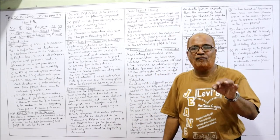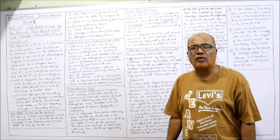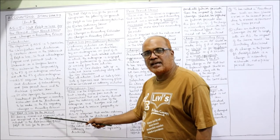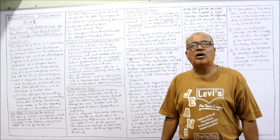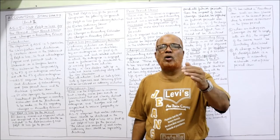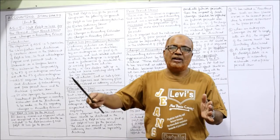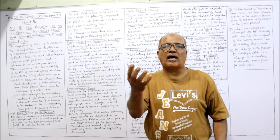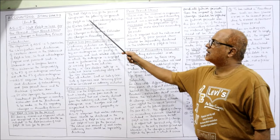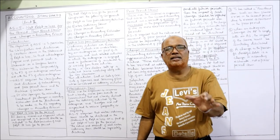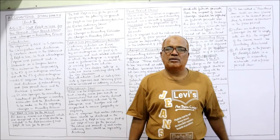Net profit or loss for the period means the current financial year. During the current accounting period, all items of income and expenses recognized in the period should be included in the determination of profit or loss. The accrual system is followed — all income and expenses are recognized for the period to calculate net profit or net loss. The net profit or loss for the period comprises five components.